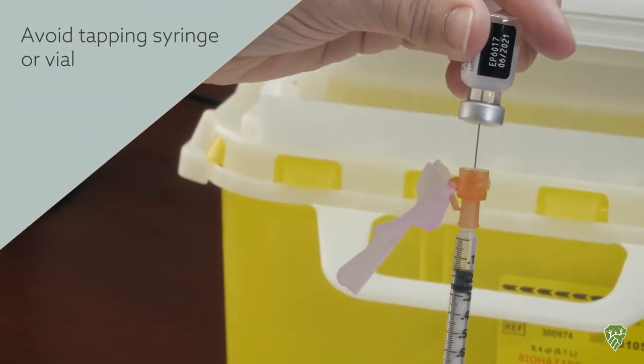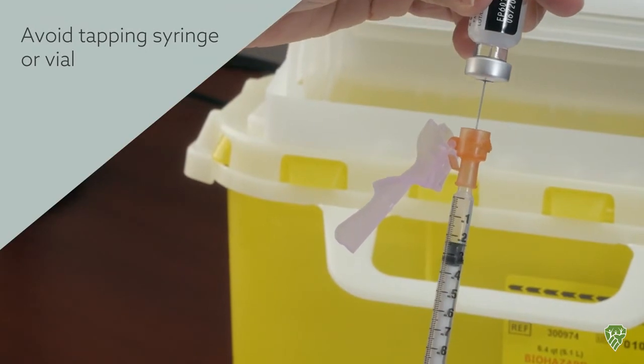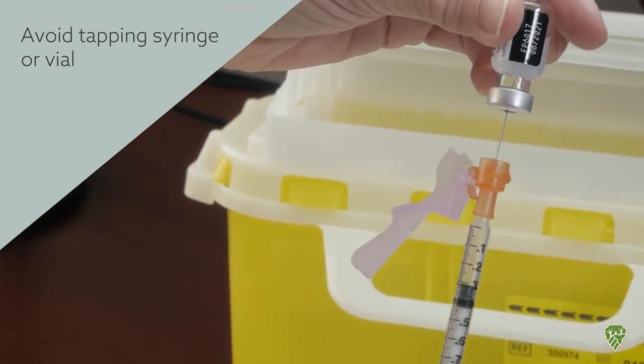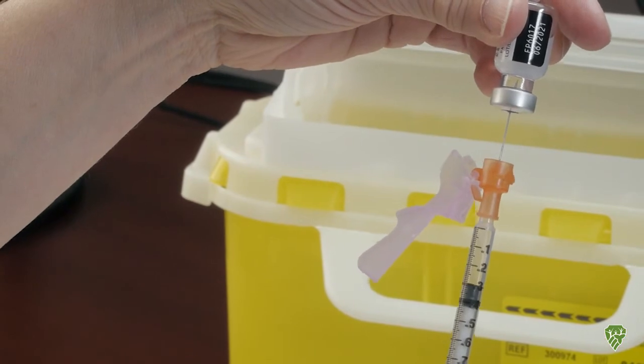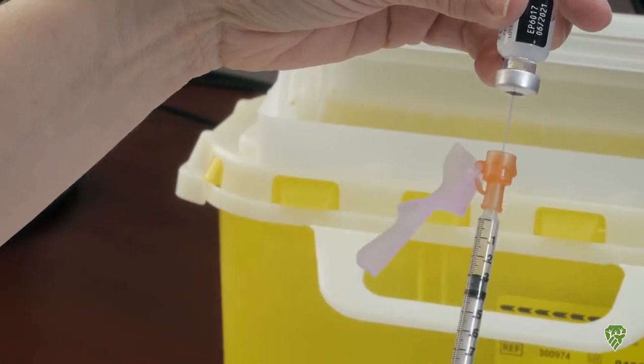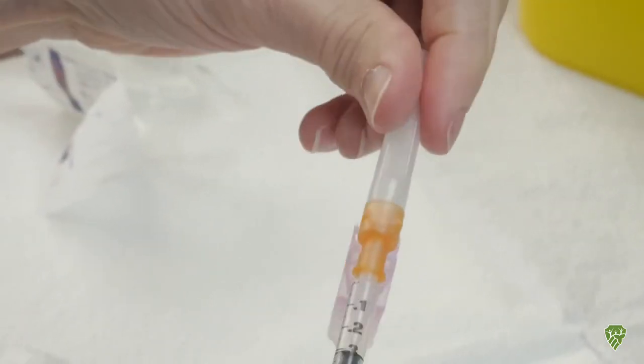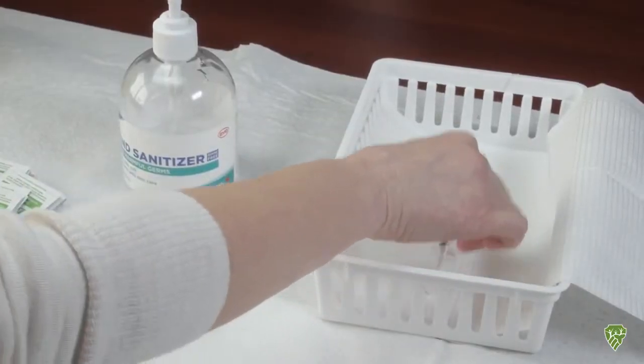We don't want to tap the syringe or the vial at this point, and get exactly the 0.3. Then we set that aside for immunization.